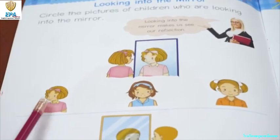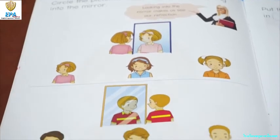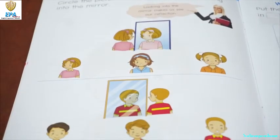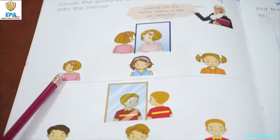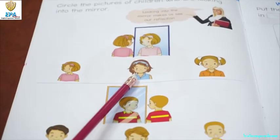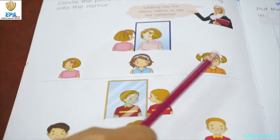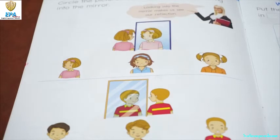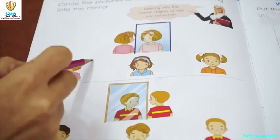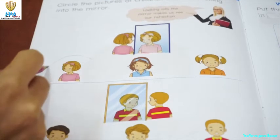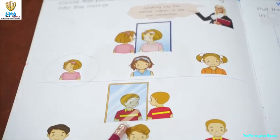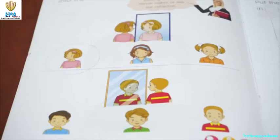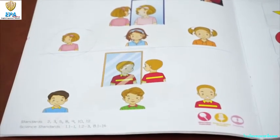Try to identify which one is in the mirror. Is it this one, this one, or this one? Very good — this one! So draw a circle on the second picture. Try to look at it very carefully.